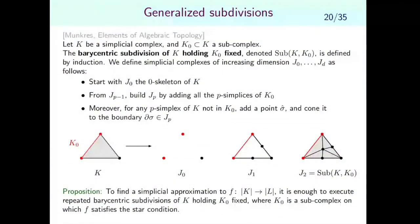First improvement: local subdivision. There is a way to subdivide a simplicial complex while holding a subcomplex fixed, called a generalized subdivision. In our case, to obtain a simplicial approximation, it suffices to subdivide only the part where the star condition fails, holding fixed the subcomplex where it already holds. This is much better in practice.